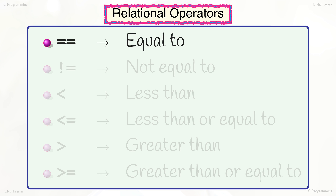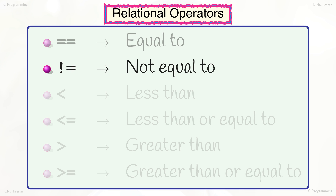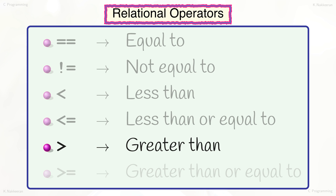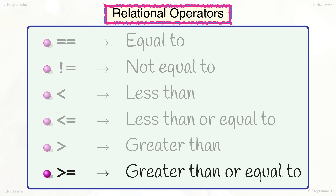C programming language has six relational operators: == for equal-to, != for not-equal-to, < for less than, > for greater than, >= for greater-than-or-equal-to, and the corresponding less-than-or-equal-to operator.